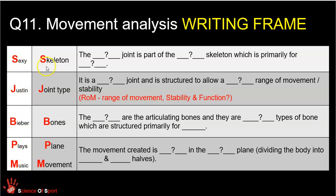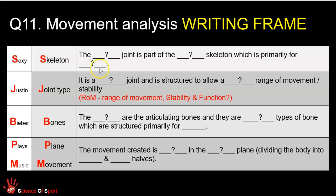How might we write that in sentences? Here's a writing frame — a vague structure of sentences that relate to each of those bits of information you've got to convey. For the skeleton (S), you could say: 'The shoulder joint is part of the appendicular skeleton, which is primarily for movement of the arms.' This framework will work whatever joint, whether it's axial or appendicular, noting what it's primarily for. The axial skeleton is for protection of the internal organs or to attach our limbs to.